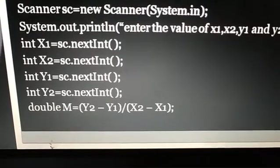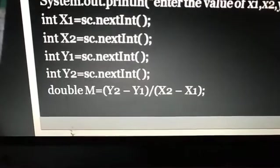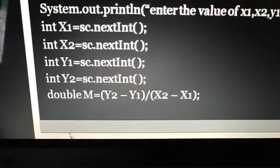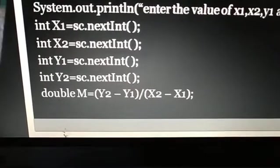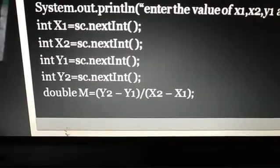If you see, double is mentioned by me just before the variable M. Why double? Because the answer is in fractional form. If the answer will come in fractional form, then we have to make the variable as double where we are going to store the value.